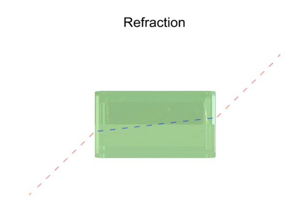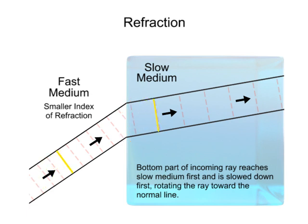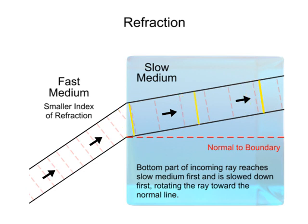To better visualize this phenomenon, let's look at this diagram. As a beam of light reaches the surface of a medium, the lower portion enters first and is slowed down. However, the upper portion is still traveling at the speed of light until it arrives at the surface and enters. This speed difference at the top and bottom aspects of the light path causes it to pivot, bending toward what is referred to as the normal — an imaginary line drawn perpendicularly to the surface of the material.